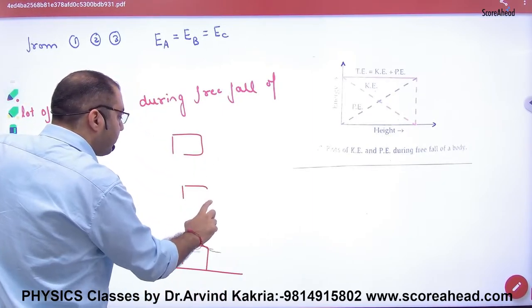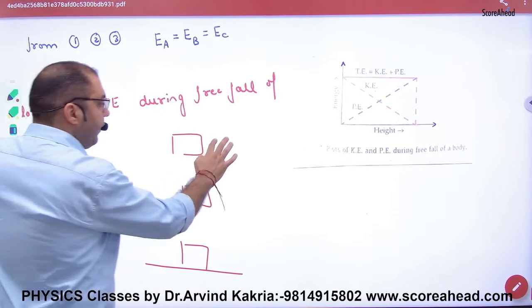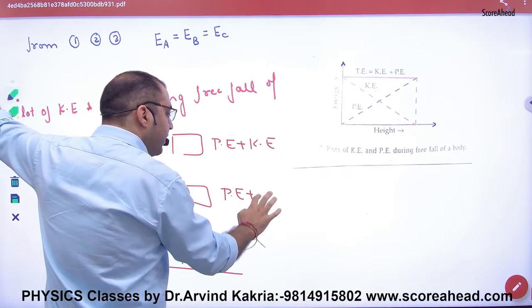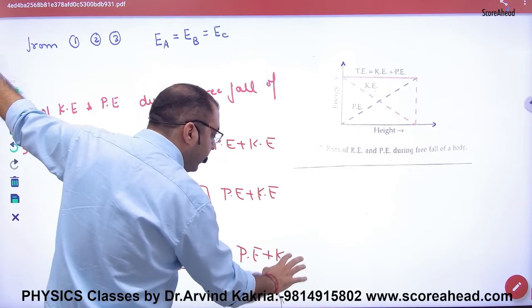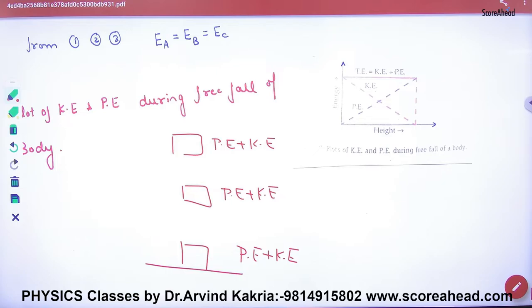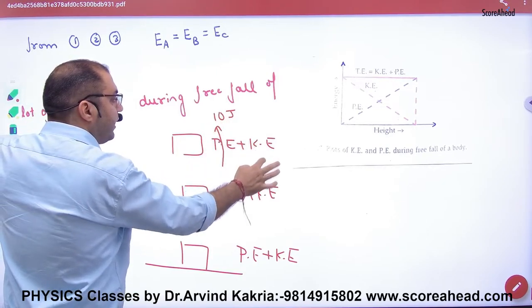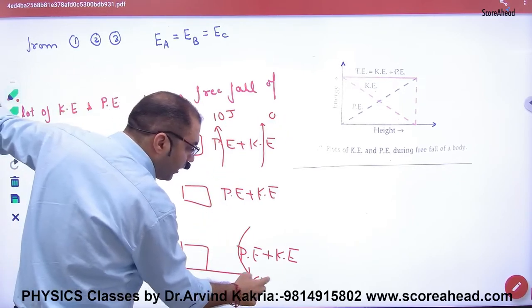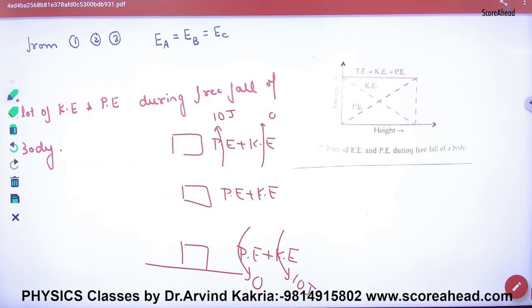Suppose one object goes down. I know sum of potential and kinetic will remain same. Consider potential value at the topmost point is 10 joules, so kinetic here is zero. And at the bottommost point, potential is zero, so kinetic becomes 10 joules. Total will remain same.